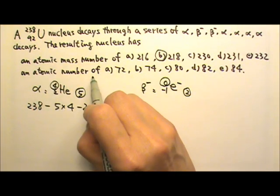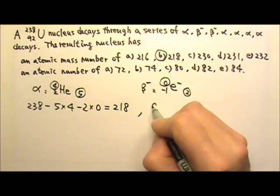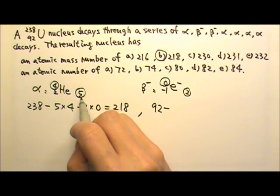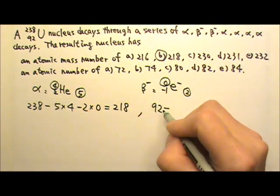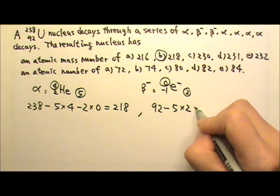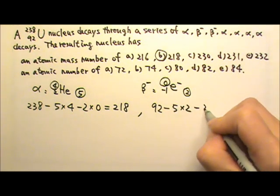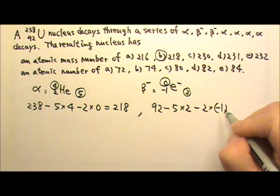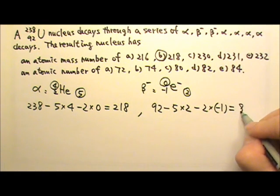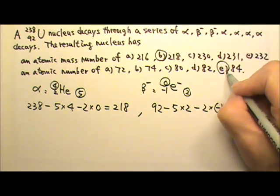For the atomic number, it starts at 92. And it goes through 5 alphas, so it's minus 5 times 2, minus 2 times negative 1. And this will give us 84. So the answer is E.